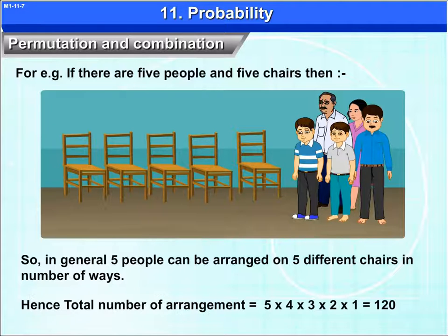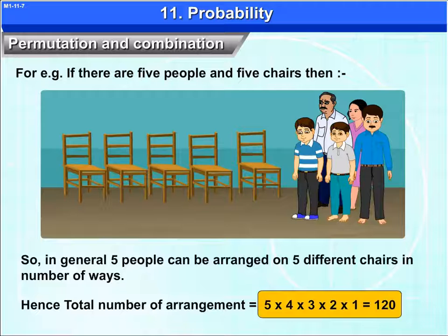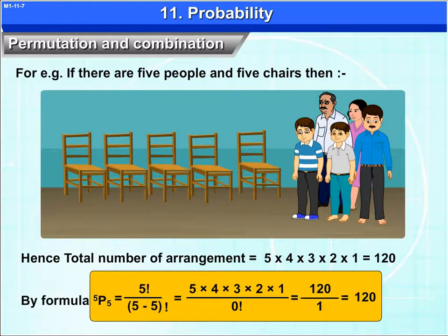Hence, the total number of arrangements is equal to 5 into 4 into 3 into 2 into 1 which is equal to 120. By formula, 5P5 is equal to 5 factorial upon 5 minus 5 factorial, that equals 5 into 4 into 3 into 2 into 1 upon 0 factorial, that equals 120 upon 1 which is equal to 120.